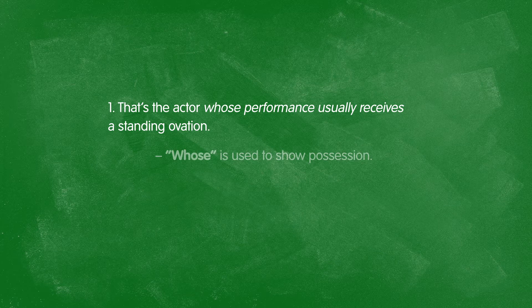We can use the relative pronouns 'who' and 'that' to discuss people, and 'which' and 'that' to discuss things. We can also show possession using the pronoun 'whose,' and usually 'whose' cannot be dropped. For example: that's the actor whose performance usually receives a standing ovation. This 'whose' shows the relationship — the actor whose performance — and we cannot drop it here.